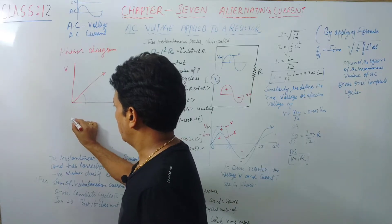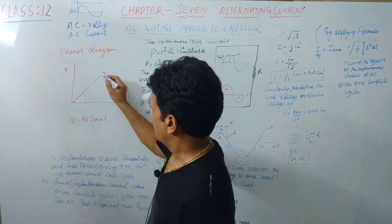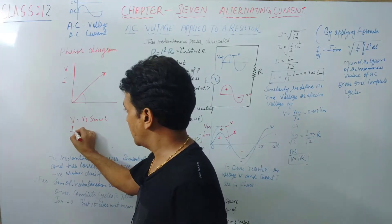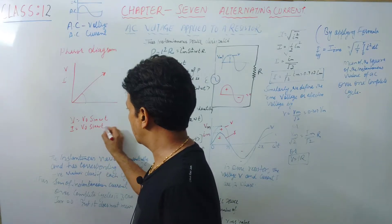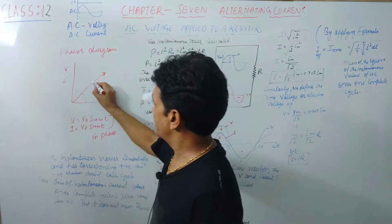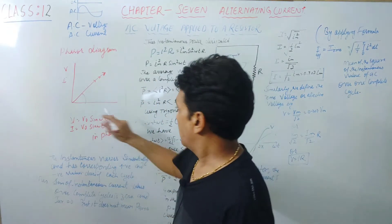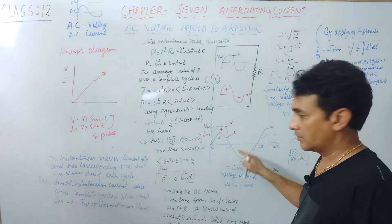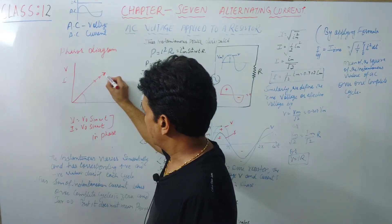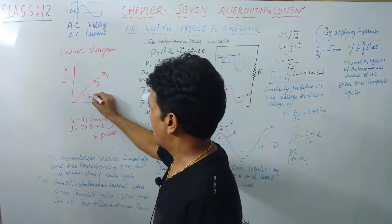i = Im sin(ωt) and v = V₀ sin(ωt). From this graph you can see that both voltage and current go in the same direction — as the voltage value goes, the current value also goes that same way. Both are in phase. As voltage goes in one direction, current goes in the same direction. This means in the phasor diagram, the phasor is a rotating vector.